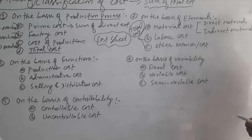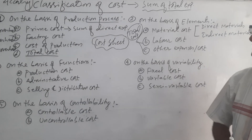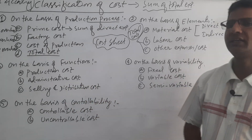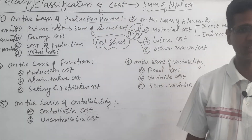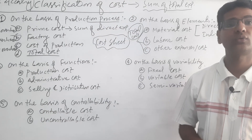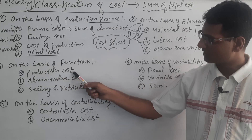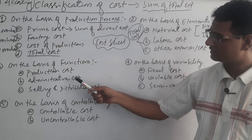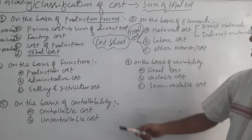Every classification has the same objective: to identify the total cost of any goods and services. The third classification is on the basis of function. Again, there are three types of cost: one is production cost, second is administrative cost, and third is selling and distribution cost. The sum of these three costs is also known as total cost. Cost of production is the sum of prime cost, factory cost, and office overhead, which is a kind of administrative expense. All the expenditures which are related to selling and distribution are known as selling and distribution cost.